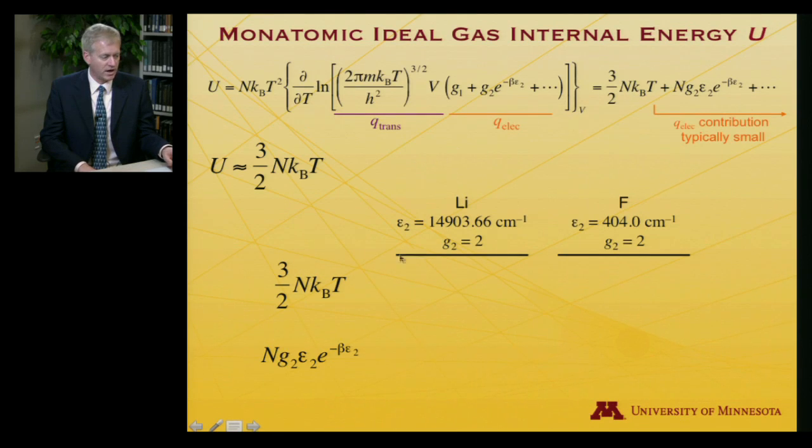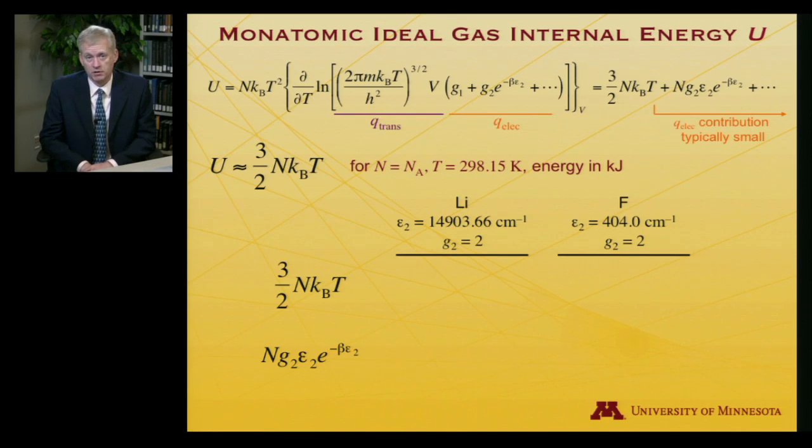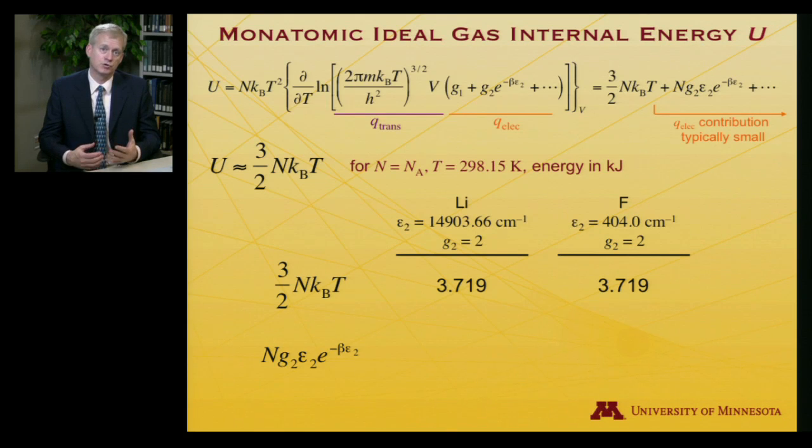If I ask about the contributions to the total internal energy, each has three halves NkT that contributes. Let's pick a particular T and a particular number of atoms. We'll take Avogadro's number—one mole of atoms—at room temperature 298.15 K, and express our energy in kilojoules. So three halves NkT in kilojoules when N is Avogadro's number is actually three halves RT, because Avogadro's number times Boltzmann's constant is the universal gas constant. So in kilojoules, that's 3.719.